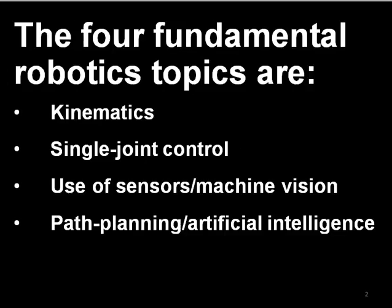In this class, we'll be looking at four different fundamental robotics topics: kinematics, single joint control, the use of sensors which includes machine vision, and path planning and artificial intelligence. I'm now going to give you a very brief overview of what each of these topics means. When we get to the beginning of each of these topics throughout the class, I'll give a more in-depth explanation of what the topic covers.